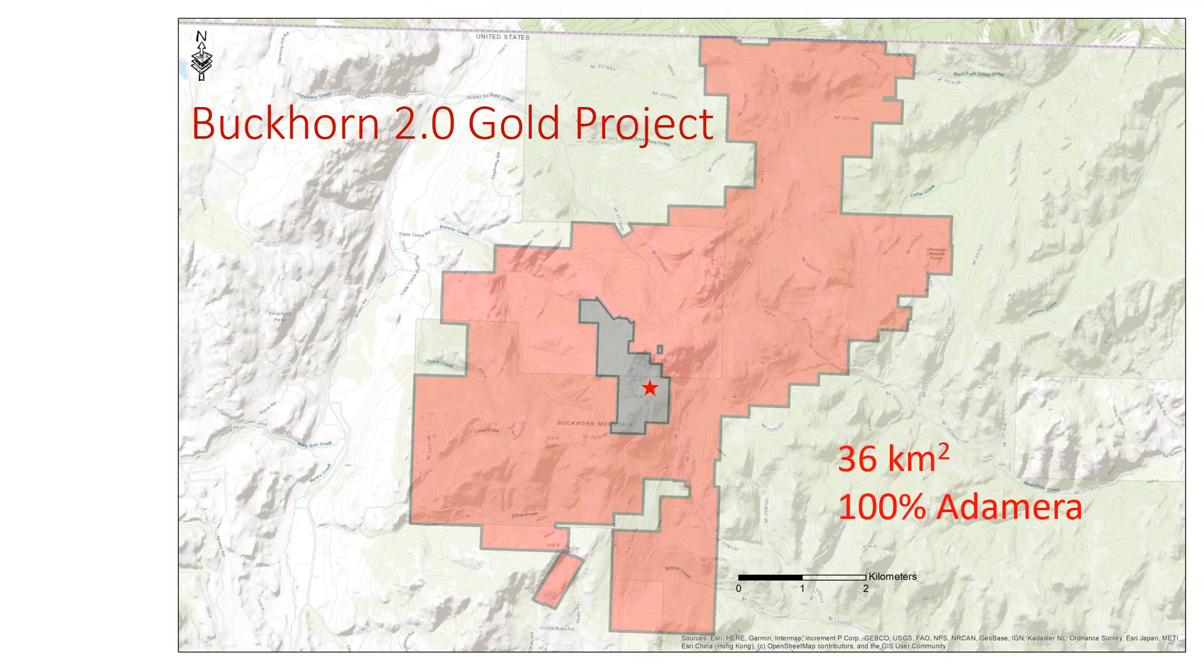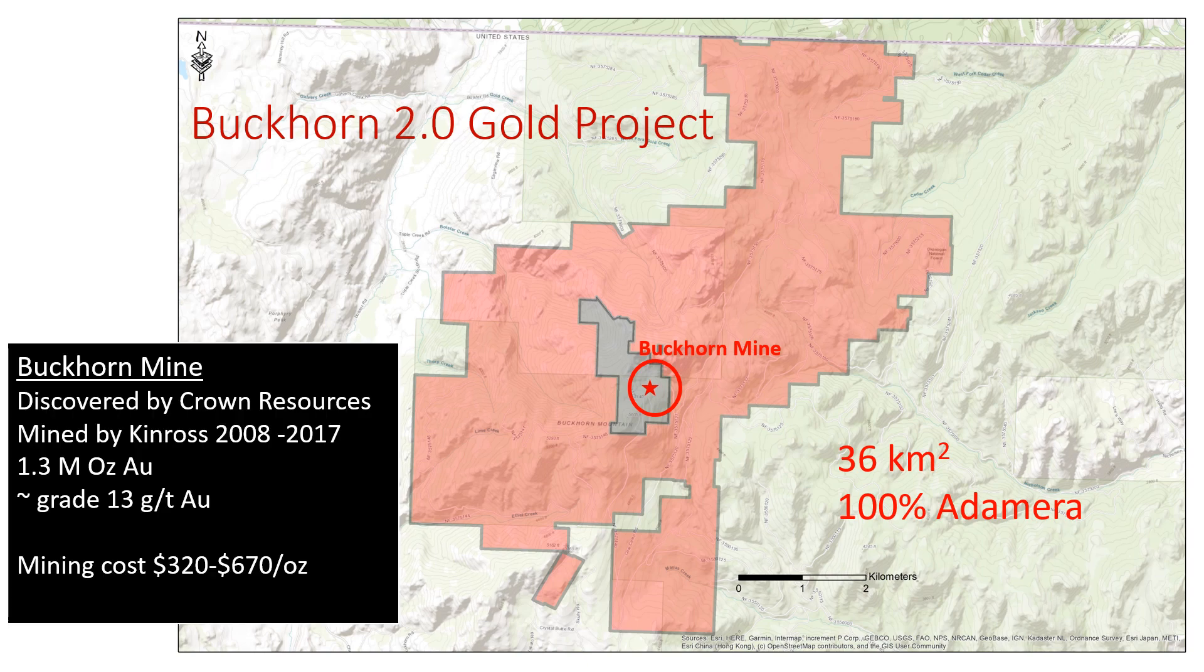This is a good-sized project. It's 36 square kilometers, 100% owned by Atomera, and it surrounds the past-producing Buckhorn Mine. The Buckhorn Mine was originally discovered by Crown in the late 1980s. It was mined by Kinross between 2008 and 2017. It produced 1.3 million ounces of gold at an average rate of about 13 grams per tonne. This was a very rich mine.